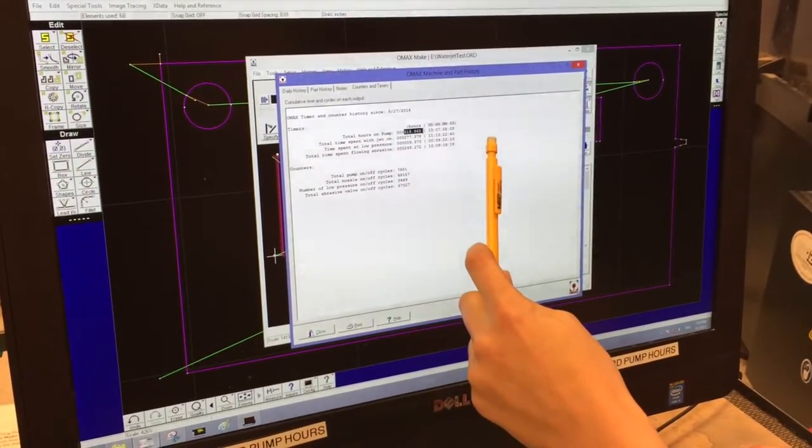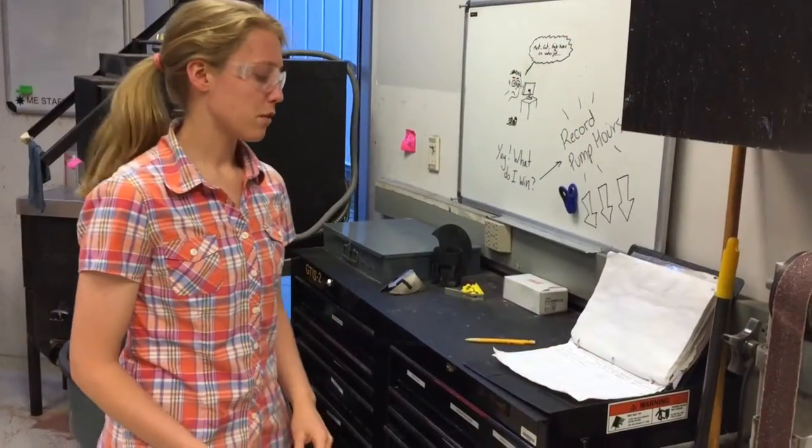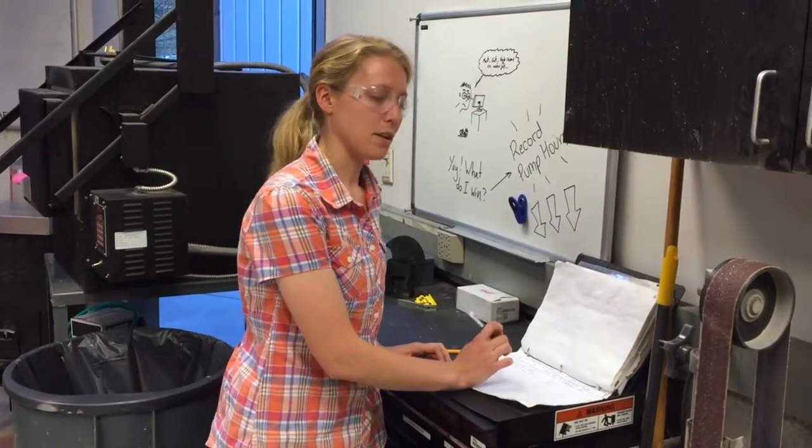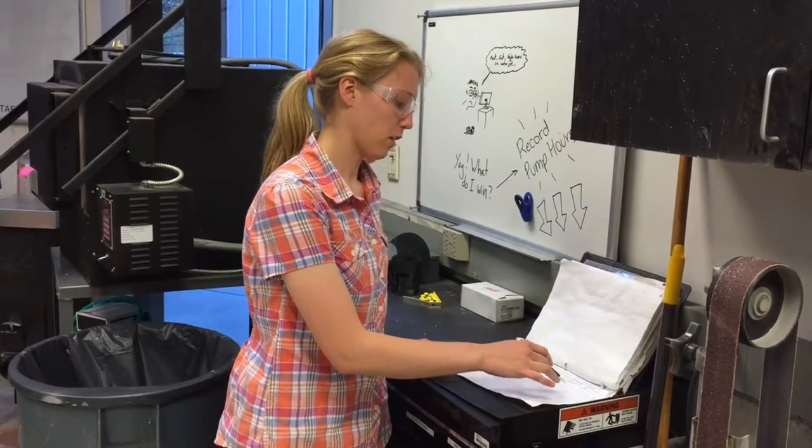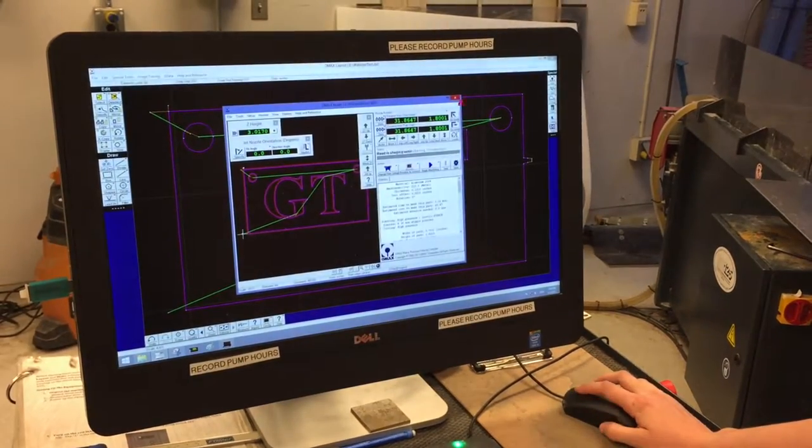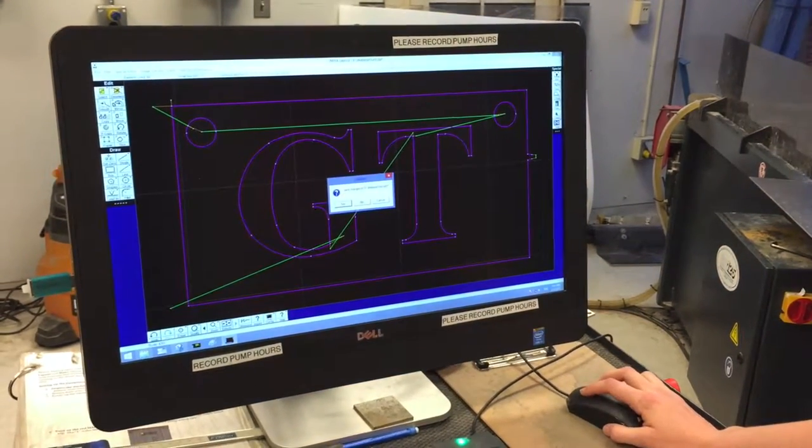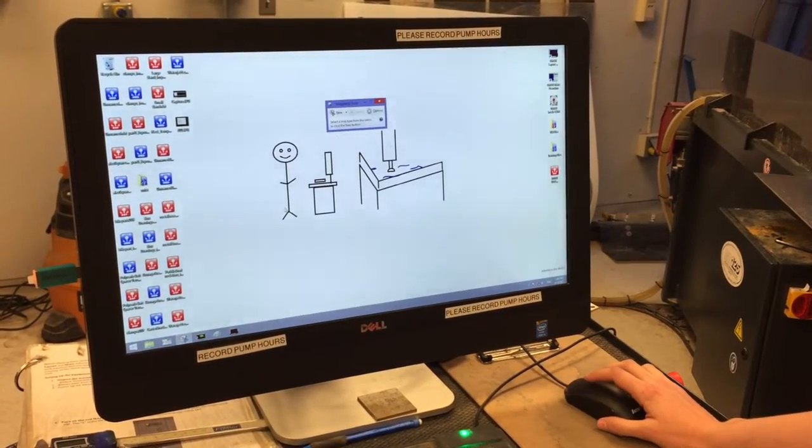In this case, it's 319.968. You'll want to record that number in our log book over here with your name, email, and purpose. So next, close everything, close Make, close Layout, and you can remove your flash drive.